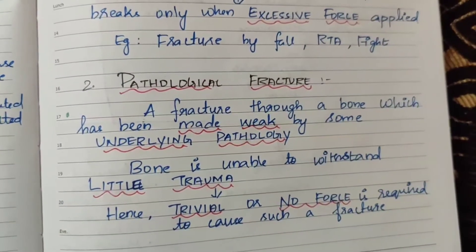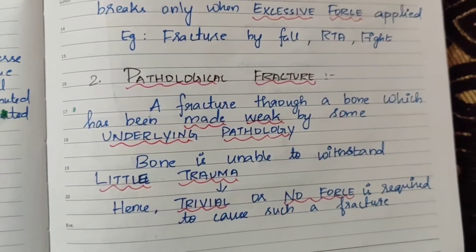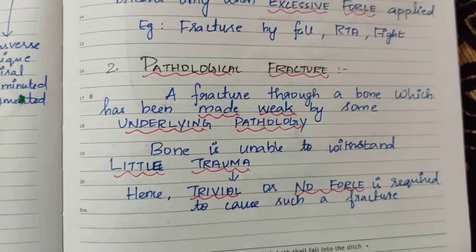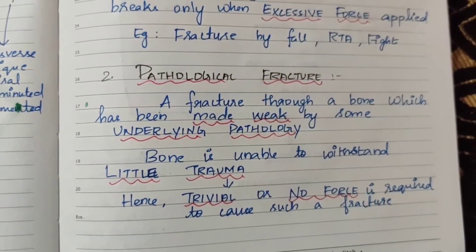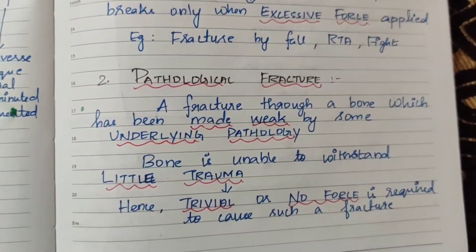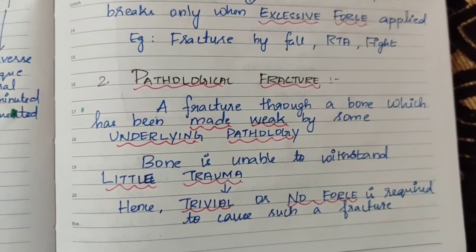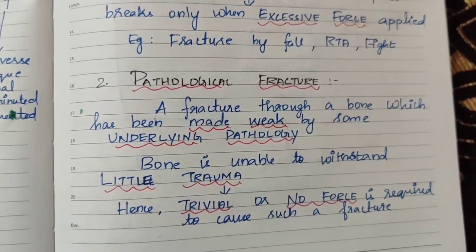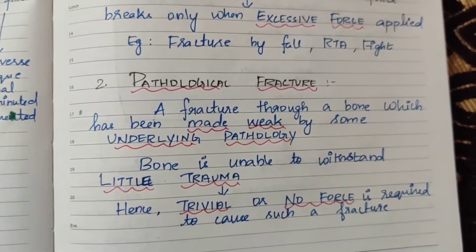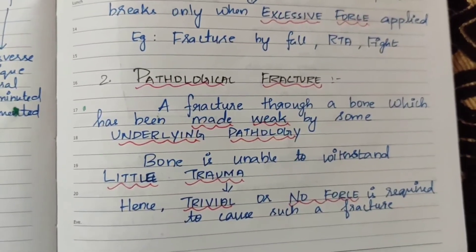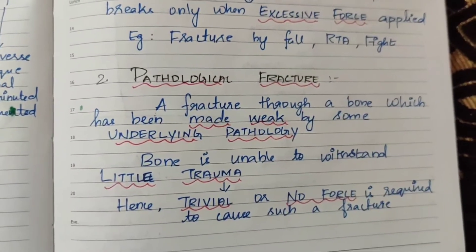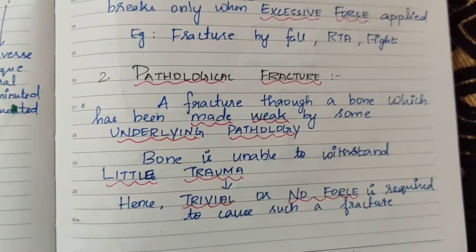Pathological fracture occurs when the bone is weakened by some underlying pathology. Where a disease condition already exists in the body, the bone is already weak. At that time, even little trauma, a little pressure, causes a break. So the fracture is unable to withstand even little trauma.